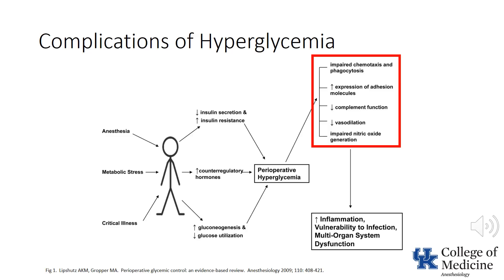Hyperglycemia is associated with a decrease in nitric oxide production and release, which leads to vasoconstriction with a consequent potential for compromised blood flow. It is also associated with a decrease in complement function and neutrophil chemotaxis and phagocytosis. The end result of these changes is to increase inflammation, increase vulnerability to infection, and increase the risk of multi-organ system dysfunction.